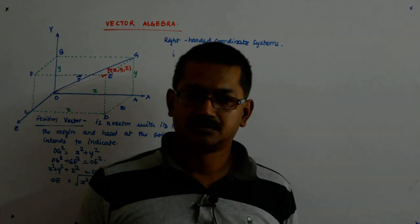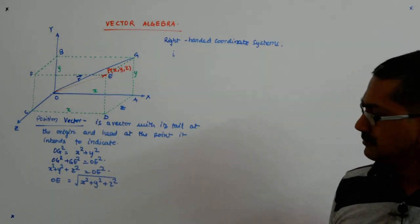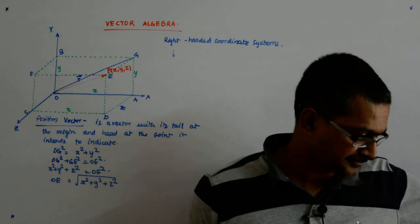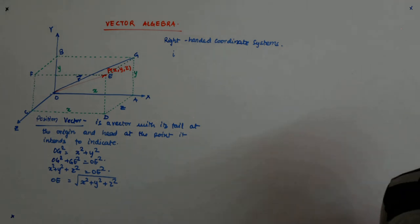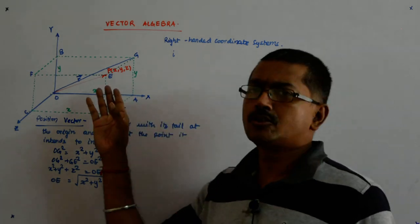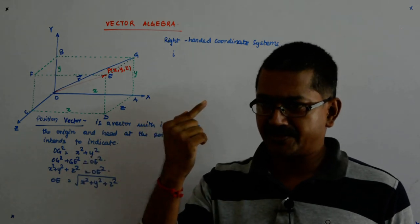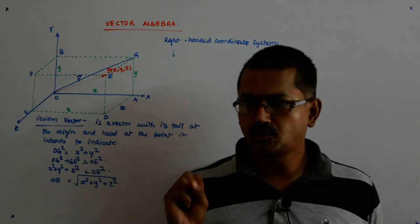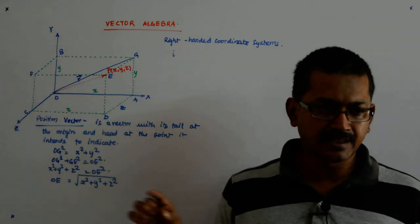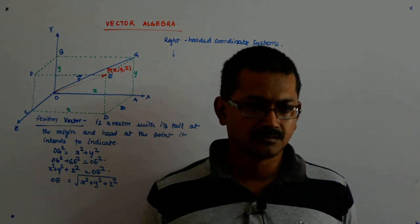We understand? So, if the coordinates of the head — the point to which our vector points — are known to me, then I can immediately find out the length of the vector. You square all the x, y, z coordinates, add them, and take the square root of that.